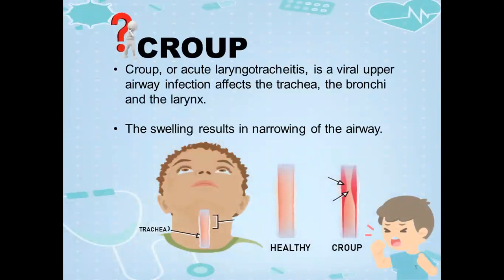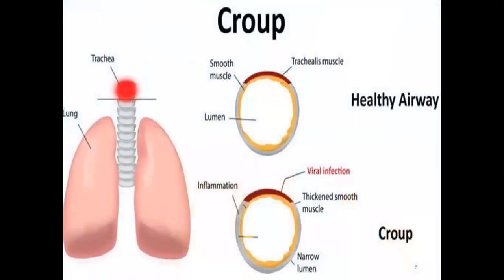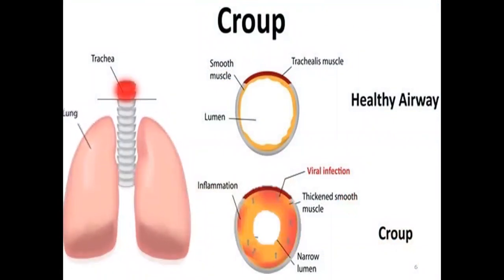CRU, or acute laryngotracheitis, is a viral upper airway infection that affects the trachea, the bronchi, and the larynx. The swelling results in narrowing of the airway. Inside the trachea, the tissue swells up and causes inflammation and narrowing of the airway tract. Here we can see that CRU is the upper airway tract infection — this is the healthy airway and this is how the smooth muscles thicken and the pathway becomes narrower.